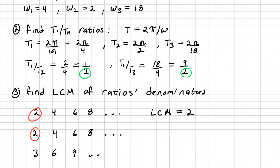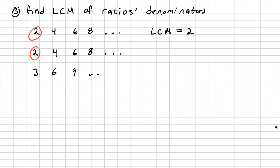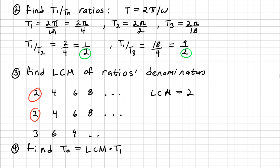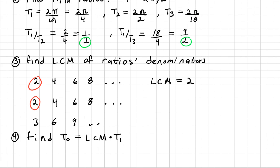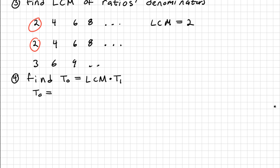Now that we have our least common multiple, we can use it to find the fundamental period using the formula: fundamental period equals the least common multiple times T₁. And if you recall, T₁ was 2π over 4. So my fundamental period is 2 times 2π over 4, and that is going to reduce to π.